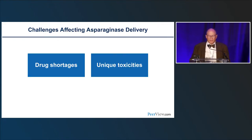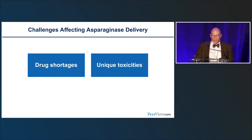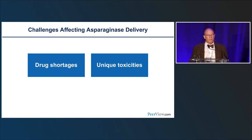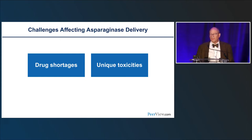The challenges that affect asparaginase delivery today fall into two main categories: drug shortages and unique toxicities. During the pandemic, we all became very aware of supply chain issues, which also affected the asparaginase story. There are unique toxicities related to asparaginases, and also unique physiologies we're working with — children handle asparaginase differently than older adults.